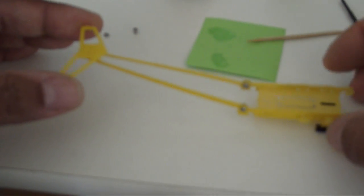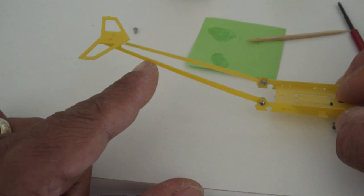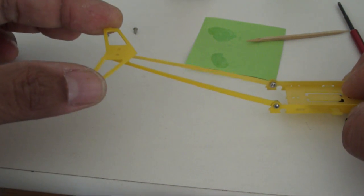Okay, so this completes the assembly of the landing gear support, boom support, and horizontal tail fin.